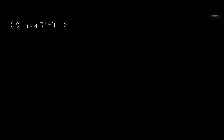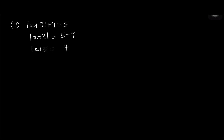Number 7: absolute of x plus 3 plus 9 equals 5. First get rid of the 9: absolute of x plus 3 equals 5 minus 9, which is negative 4. But the absolute value is always positive, so it can never equal a negative value. Therefore this equation has no solution; x belongs to the empty set.